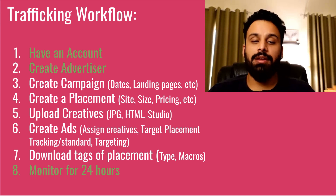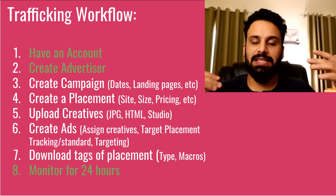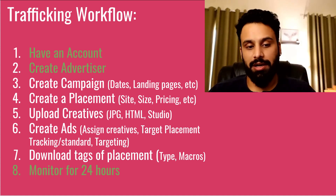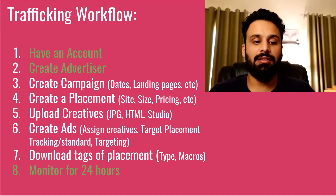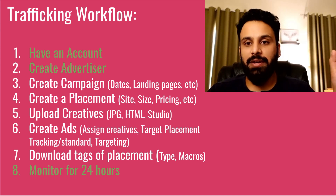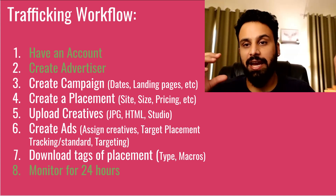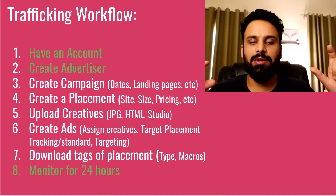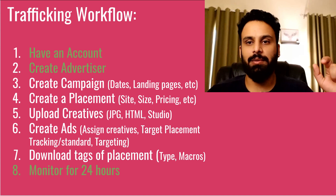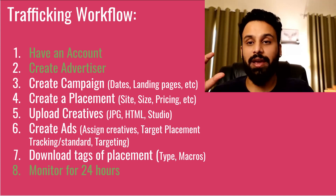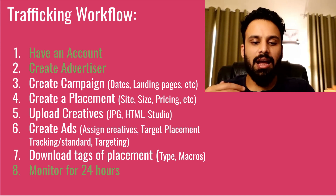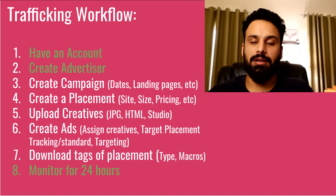The overall trafficking workflow — points three through seven are what you always need to remember in order. First, create an account (usually already exists). Second, create an advertiser (usually already exists). Third, create a campaign — here you enter the dates, landing pages, etc. Fourth, create a placement — in the placement you associate it with a site (e.g., BBC.com) and enter the size; every size gets one placement with one unique tag, plus pricing for reporting.